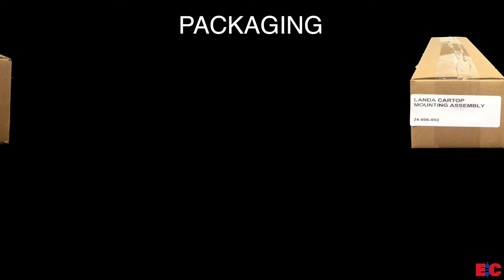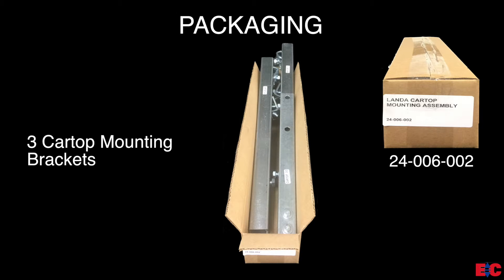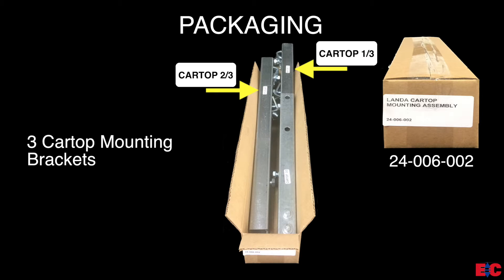The second box is labeled 24-006-002, which contains three car top mounting brackets. Each bracket has a sticker to identify which bracket assembly piece it is: car top 1 of 3, car top 2 of 3, and car top 3 of 3.